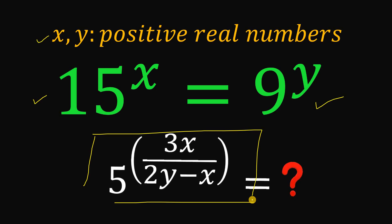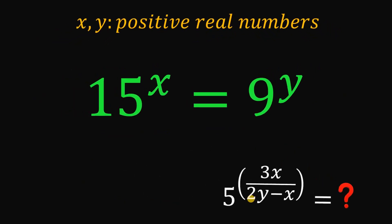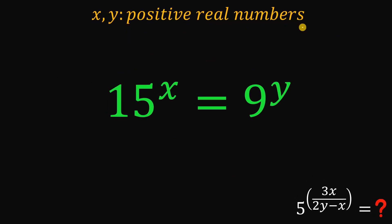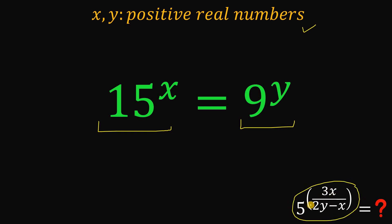You can pause this video if you want to give this problem a try. Now, given that x and y are positive real numbers satisfying the equation 15 raised to the power of x equals 9 raised to the power of y, our main goal is to find the numerical value of 5 raised to the power of 3x over 2y minus x.